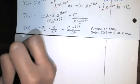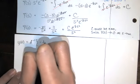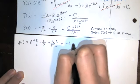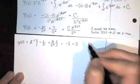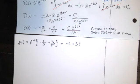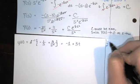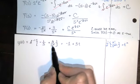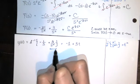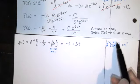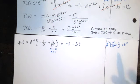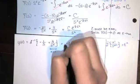With C equal to zero, Y(S) simplifies to −1/S + 3/S². Taking the inverse Laplace transform, the inverse of 1/S is one and the inverse of 1/S² is T. So Y(T) equals negative one plus three T, or equivalently three T minus one.